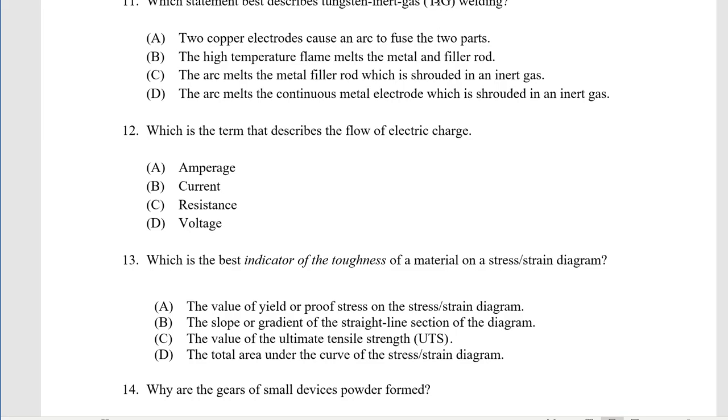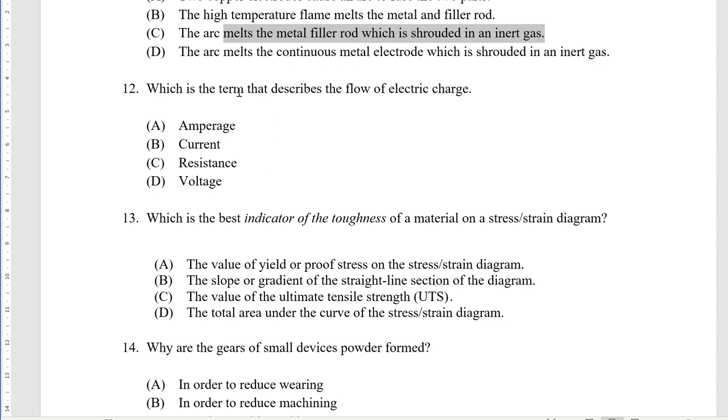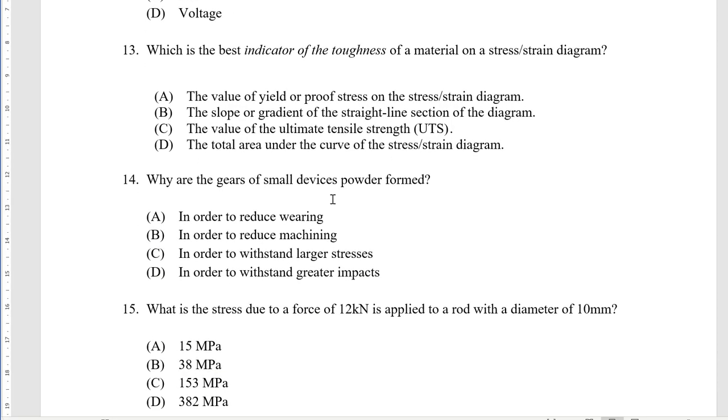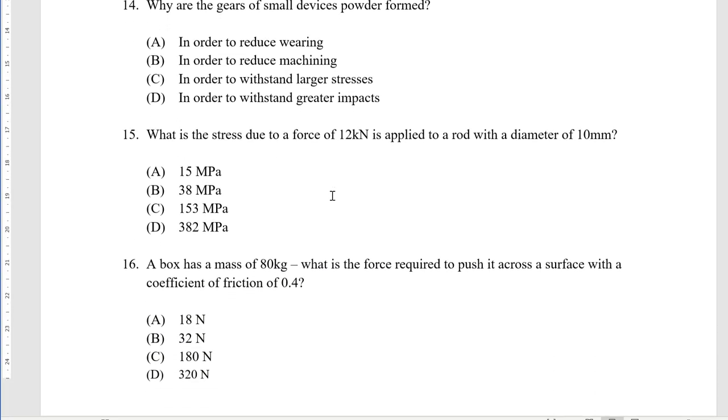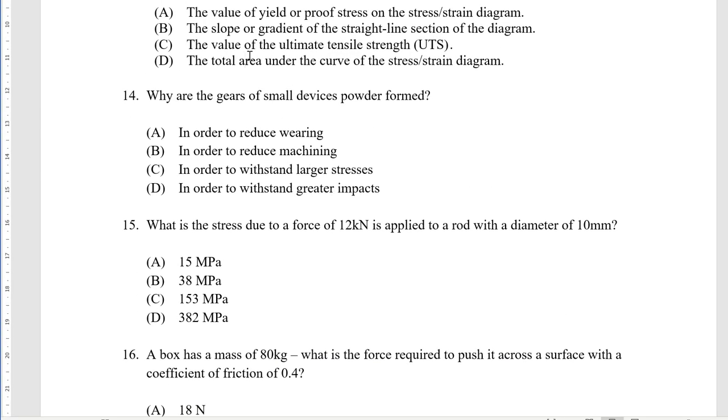Which statement best describes tungsten inert gas or TIG welding? The arc melts the filler rod which is surrounded in inert gas. Which is the term that describes the flow of electric charge? That's current. Which is the best indicator of the toughness of material on a stress strain diagram? The total area under the curve.